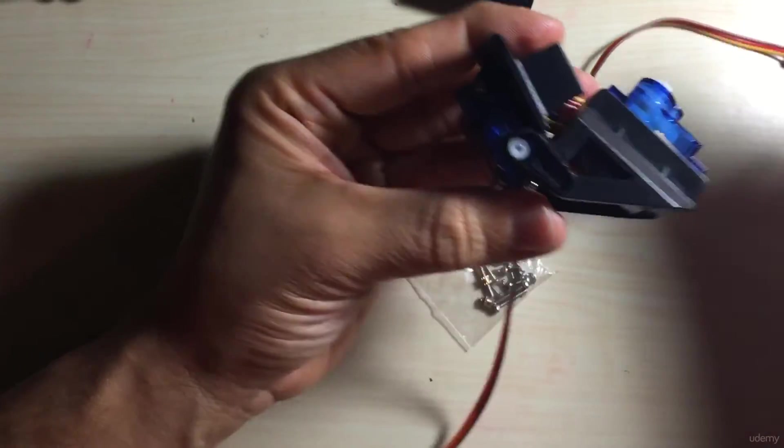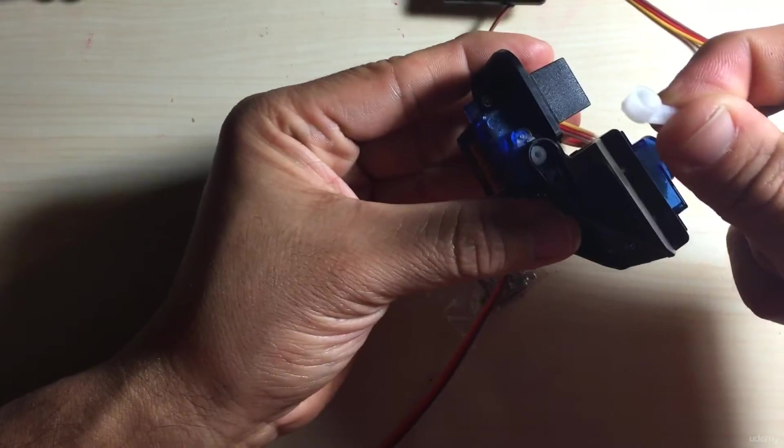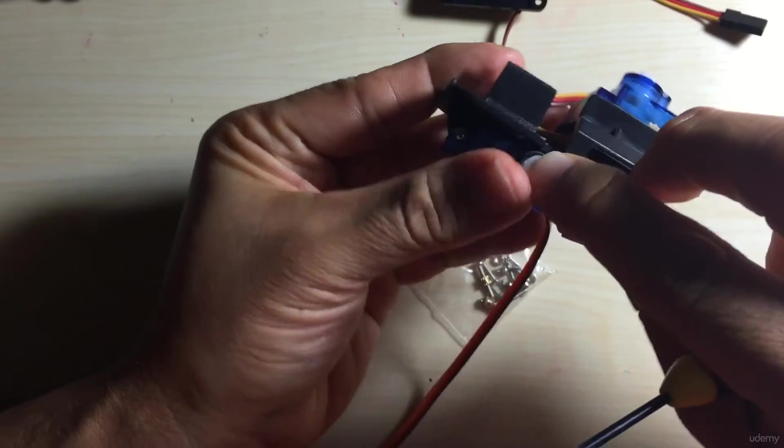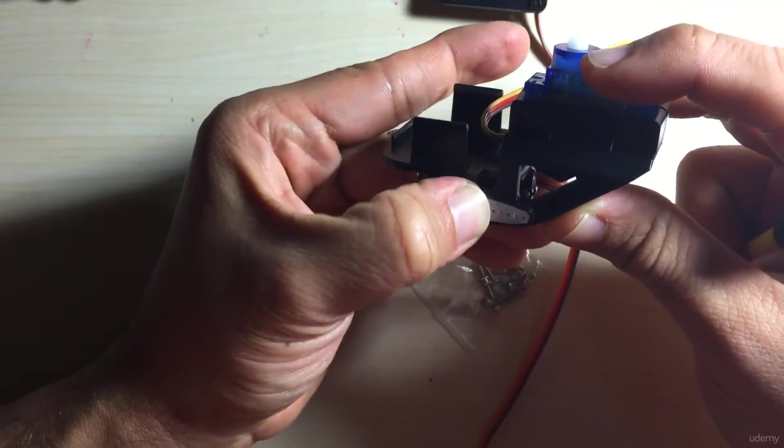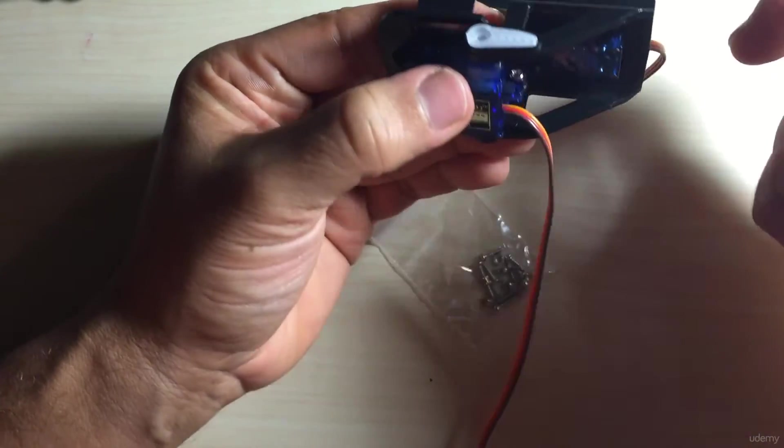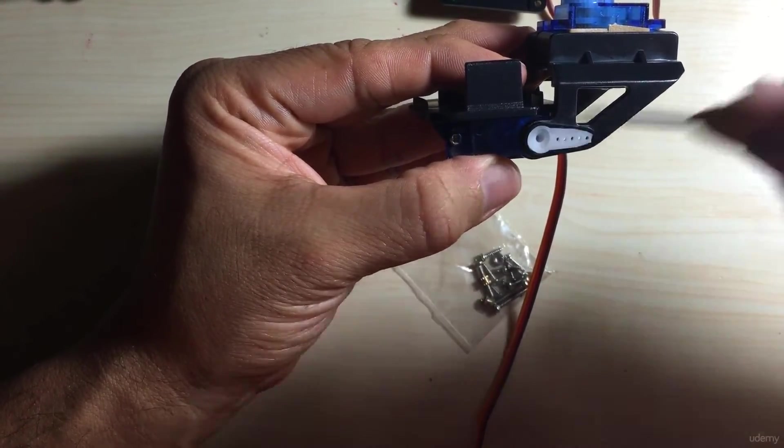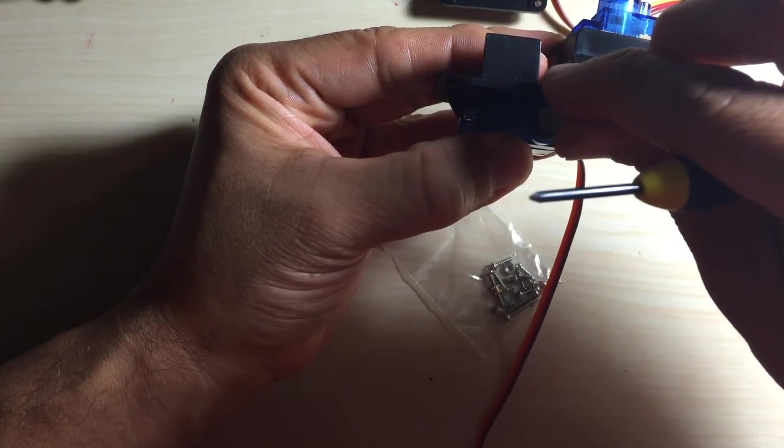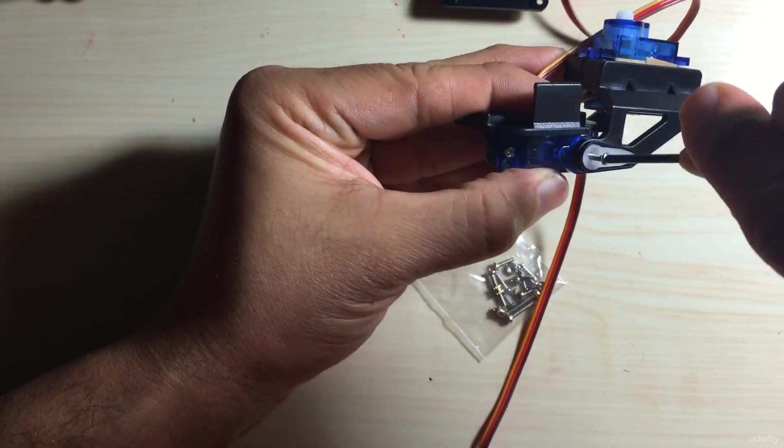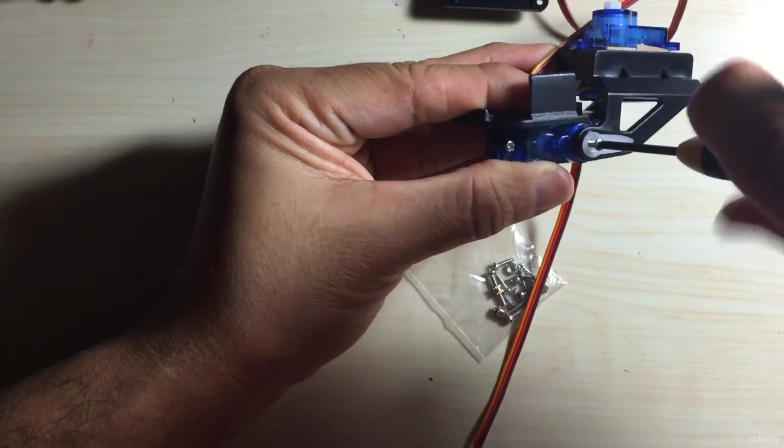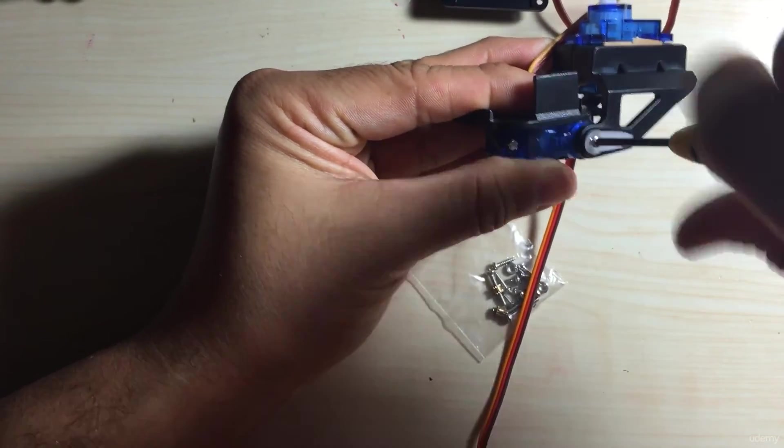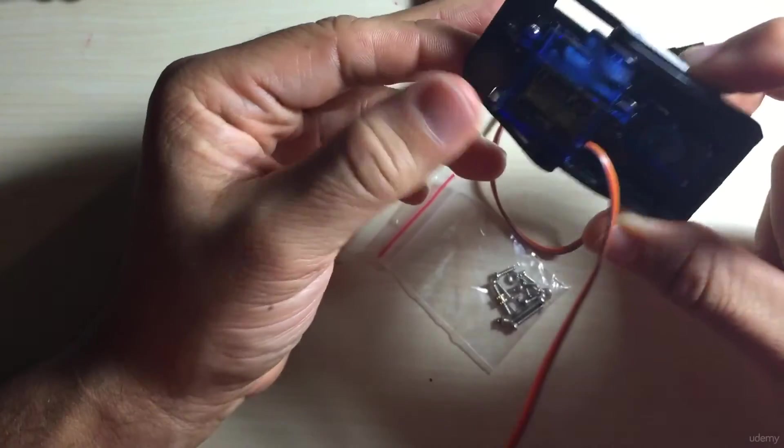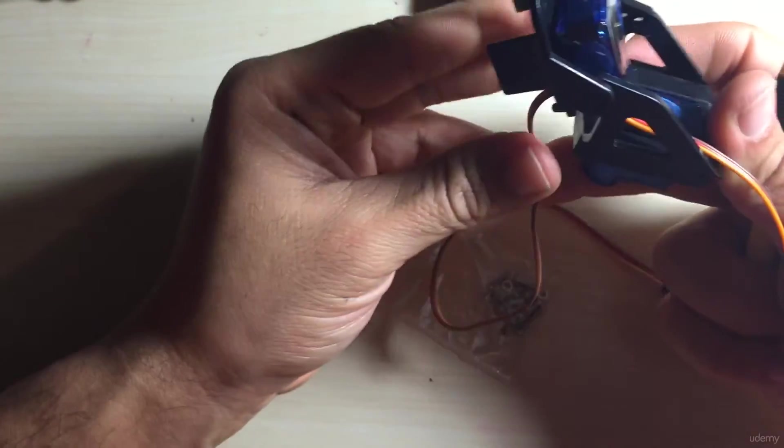And once that's in place we're almost done. We take a servo horn and we connect that servo horn. It should fit nicely in the actual bracket here and then there's one more screw that we have to apply here to secure that horn to the servo. So I'll go ahead and screw that in place.